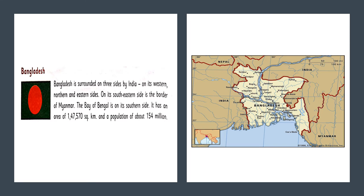Our next neighbor is Bangladesh. Bangladesh is surrounded on three sides by India — on its western, northern, and eastern sides. On its south eastern side is the border of Myanmar, and the Bay of Bengal is on its southern side.